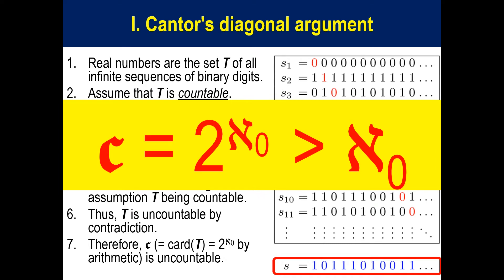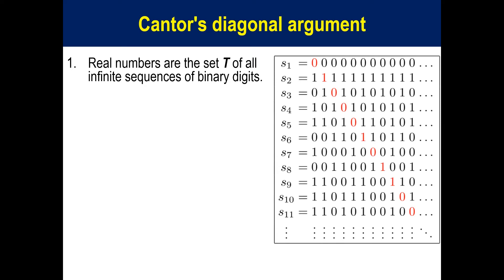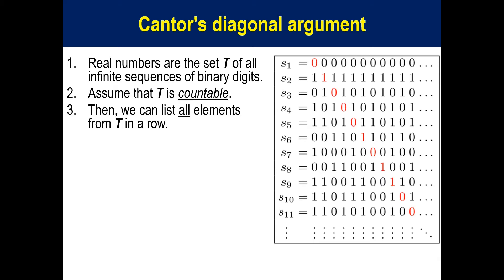First, I'll discuss Cantor's Diagonal Argument. Cantor's Diagonal Argument starts by considering real numbers in a unit interval as a set T of all infinite sequences of binary digits. Assume that T is countable. Then we can list all elements from T in a row.